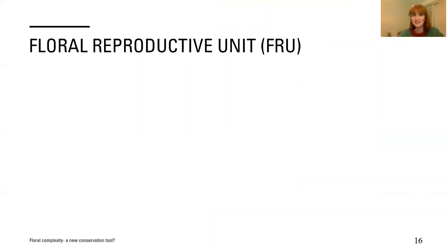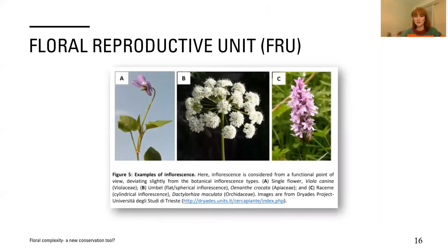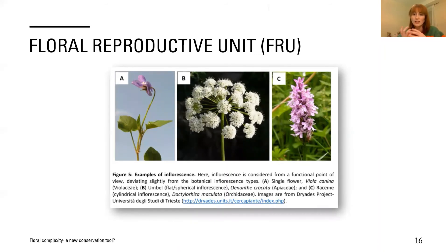The fifth and final variable is the floral reproductive unit, looking at the inflorescence — the whole head of the plant — categorised into three types: A, the single flower; B, the umbel, a flat symmetrical inflorescence; and C, the raceme inflorescence, which is cylindrical and quite clustered together. It looks a lot easier for a pollinator to access the flower on its own in image A than in image C. The inflorescence can add to the complexity of the flower, making it more difficult for the pollinator to access the nectar.